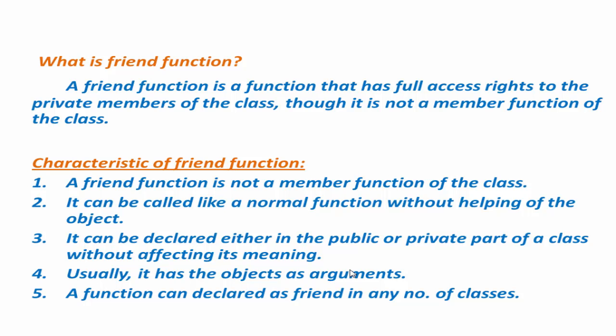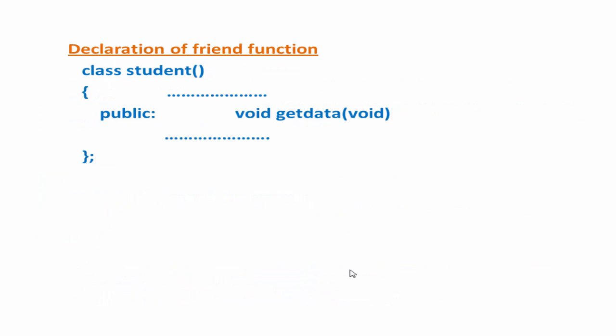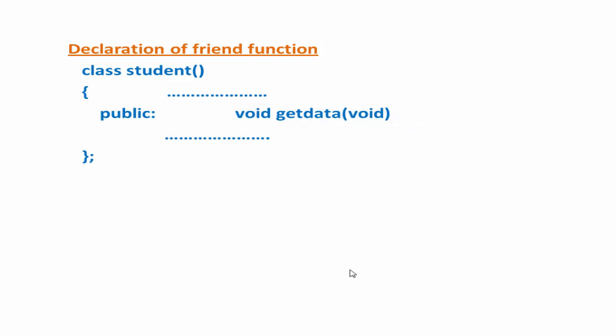Next we see how we can declare a friend function. Friend function declaration is similar to the member function declaration, but the only difference is that we need to add the keyword 'friend' before the function declaration. For example, here we declare a function 'void getData'. This is a member function. To make it a friend function, we add the keyword 'friend' before the function declaration. Now getData is a friend function.